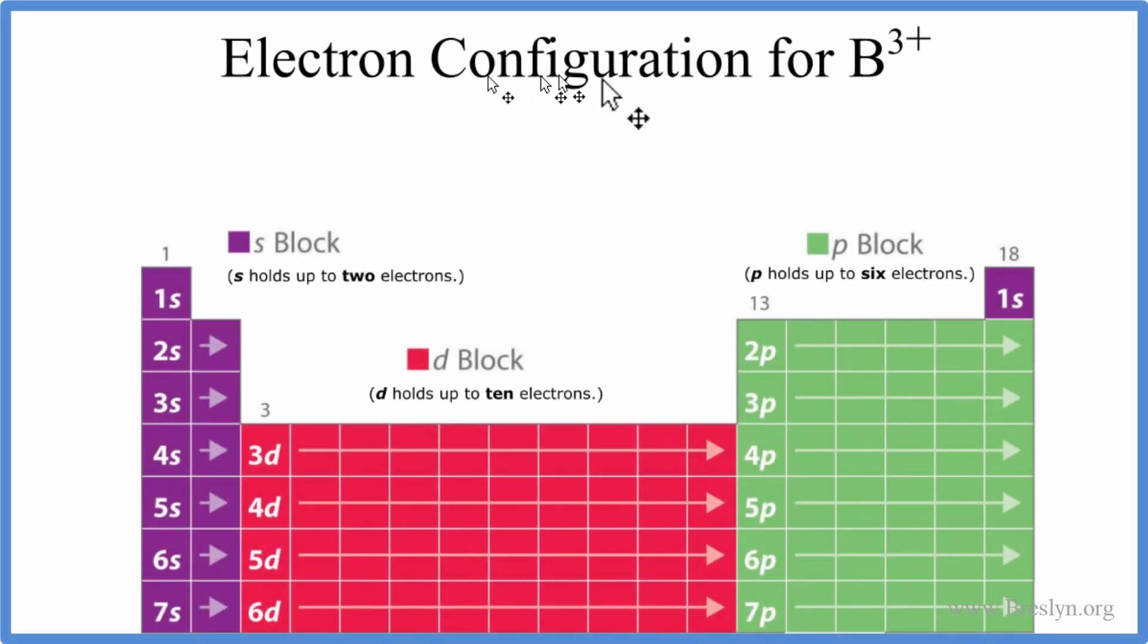In this video, we'll write the electron configuration for B3+, that's the boron ion. We'll start by writing the configuration for just boron, neutral boron, which is boron as we find it on the periodic table. It doesn't have a plus or a minus charge, it's just neutral.